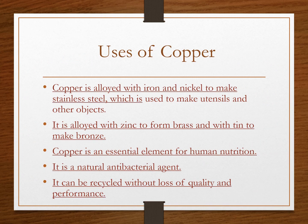Copper is alloyed with iron and nickel to make stainless steel, which is used to make utensils and other objects. It is alloyed with zinc to form brass and with tin to make bronze. Copper is an essential element for human nutrition and is a natural antibacterial agent. It can also be recycled without loss of quality and performance.